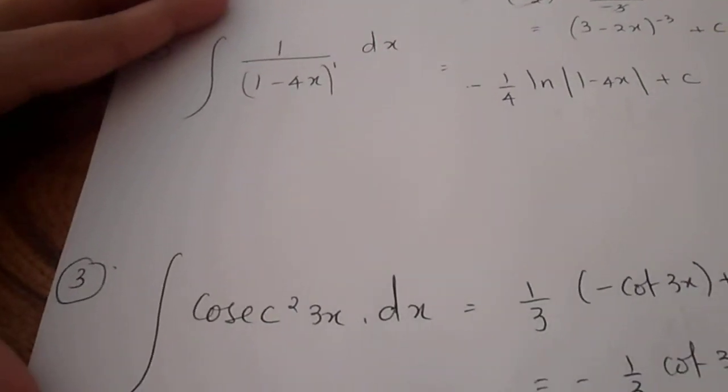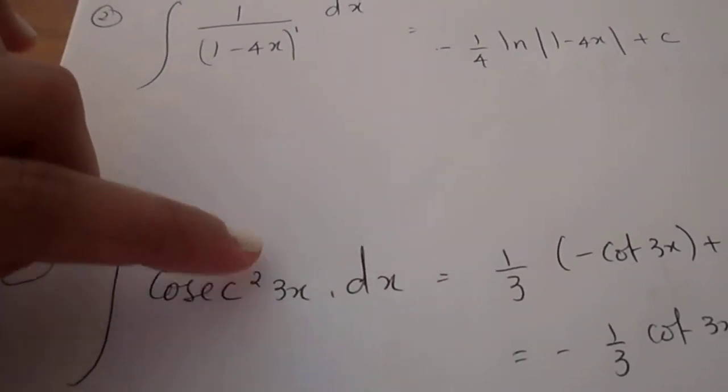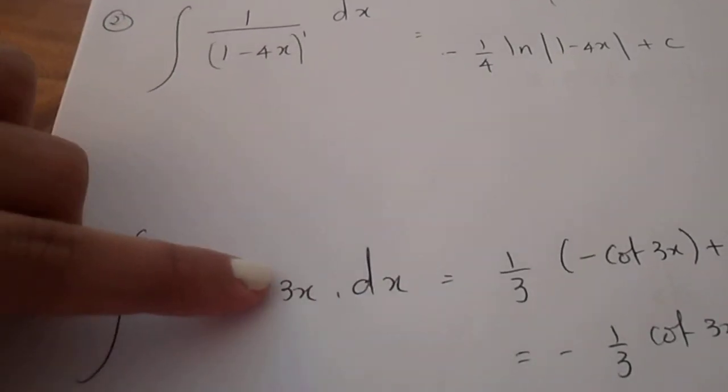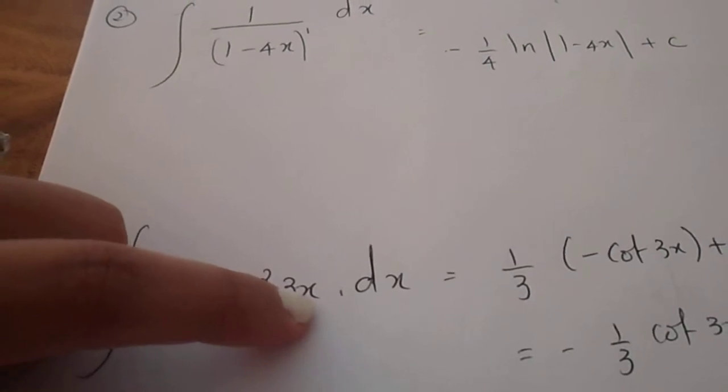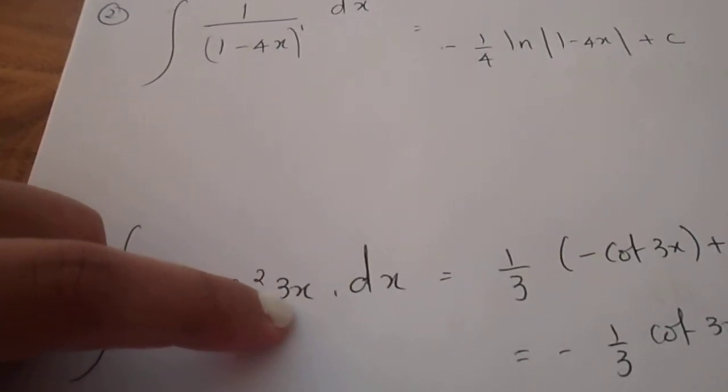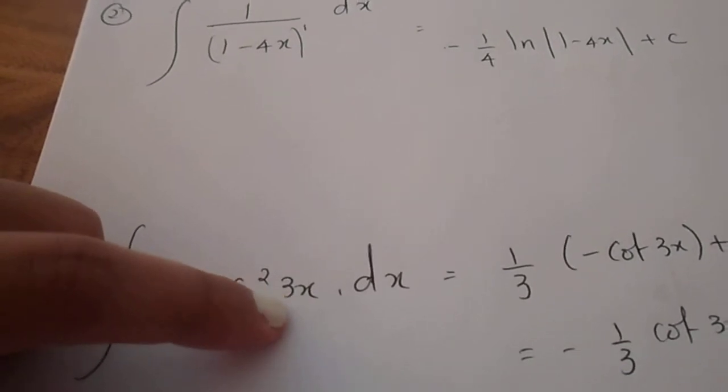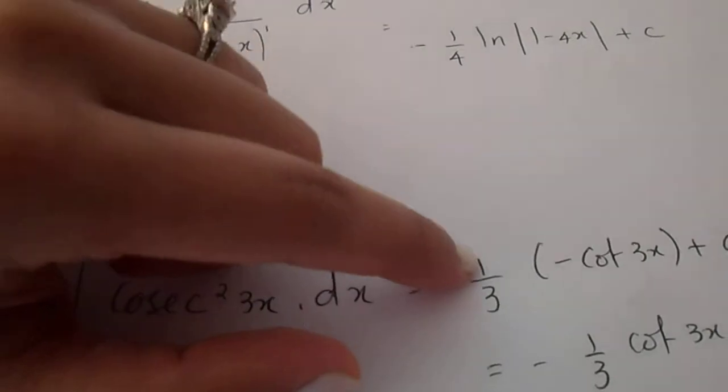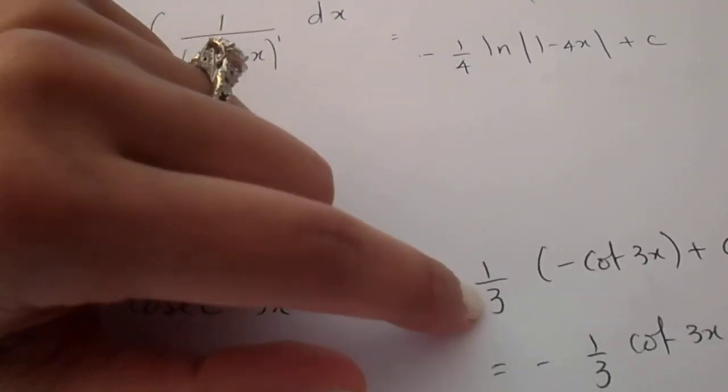The next question is a trigonometrical question. The integral of cos x squared 3x dx. Let us look at the angle and apply the chain rule integration method to this angle 3x. When I differentiate 3x, I get 3. But don't forget we are integrating, so I have to reciprocate my derivative. So I'm going to get 1 over 3.